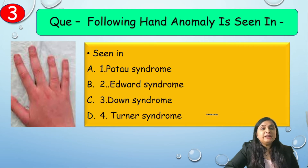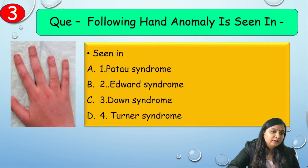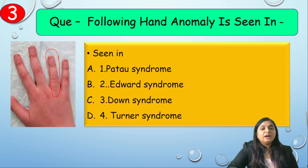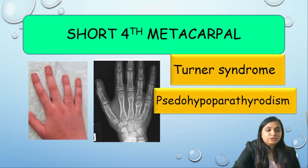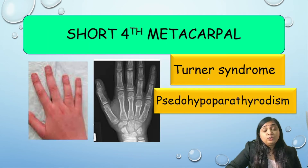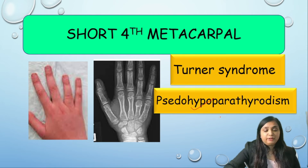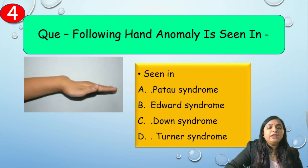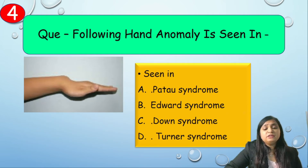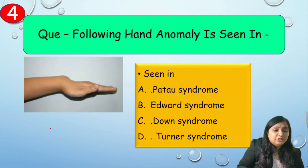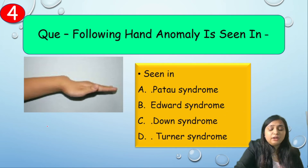Question 3: The following hand anomaly is seen in which syndrome — Patau, Edward, Down, or Turner? The image shows fourth metacarpal shortening, which is associated with Turner syndrome. It can also be associated with pseudohypoparathyroidism and pseudo-pseudohypoparathyroidism. Question 4: The following hand anomaly — Madelung deformity or dinner fork deformity — is also associated with Turner syndrome.